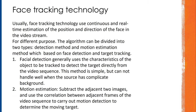Face tracking technology uses a combination of real-time estimation of position and detection of the face in the video stream. For different purposes, the algorithm can be divided into two types: the detection mode method and the motion estimation method, which are based on face detection and target tracking. The first is facial detecting — generally using characteristics of the object to be tracked to detect the target directly from the video sequence. This method is simple but cannot handle well when the source has a complicated background. The second is motion estimation — subtracting two adjacent images and using the correlation between adjacent frames to carry out motion detection to determine the moving target.